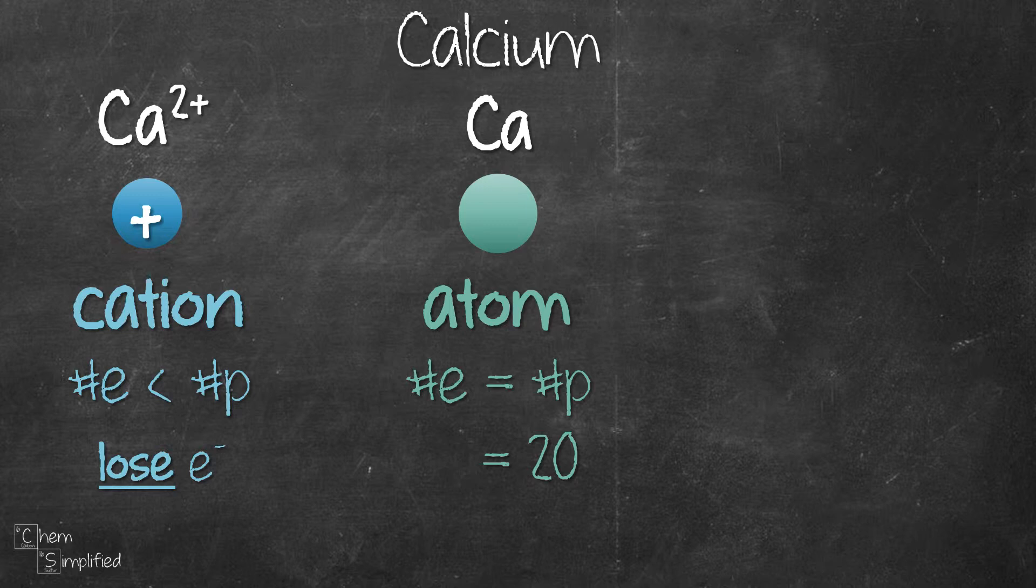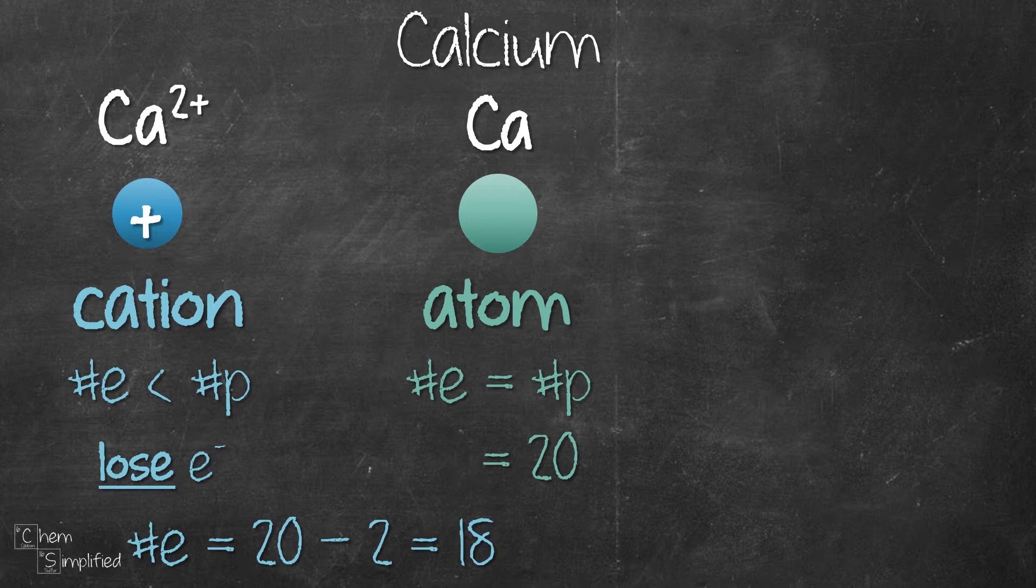Since in order for calcium to become +2, it will have to lose 2 electrons. Therefore, the number of electrons is 20 minus 2, which equals 18. As we can see, the number of electrons, 18, is less than the number of protons, which is 20.